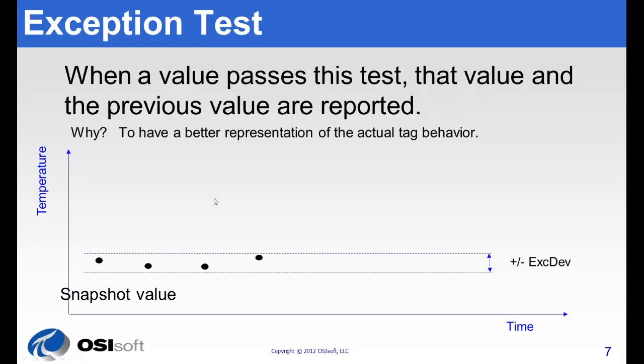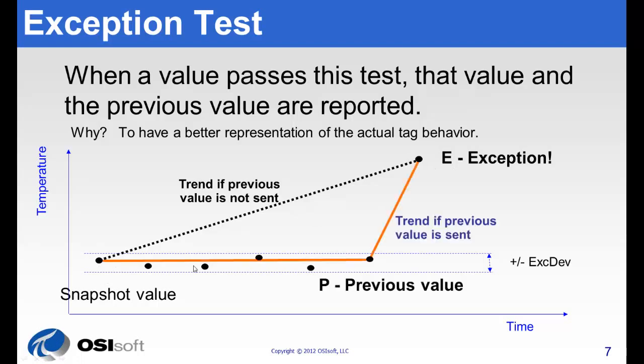As we go on, raw values are falling within our dead band. We see one has fallen out, so this is an exception, and we're going to keep it. However, if we just stored the snapshot value and the new exception value, we'd miss what was actually going on with the data. So we end up sending the previous value as well, the exception and the one right before it.